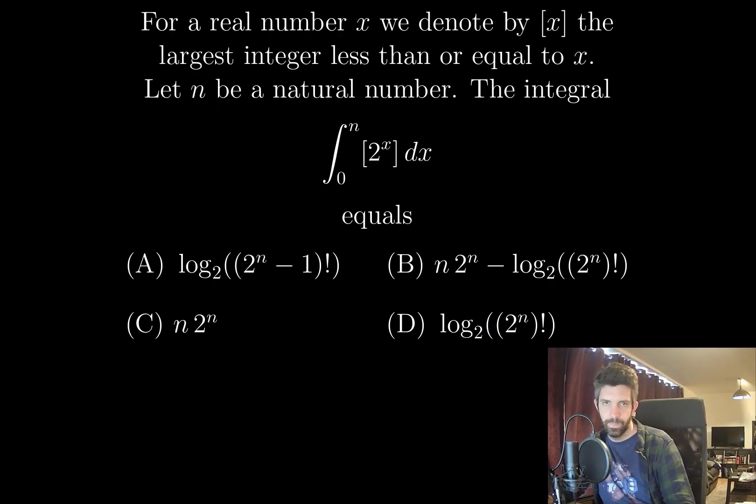For a real number x, we denote by bracket x the largest integer less than or equal to x. Let n be a natural number. The integral from 0 to n of bracket 2 to the x dx equals one of these messy-looking options.